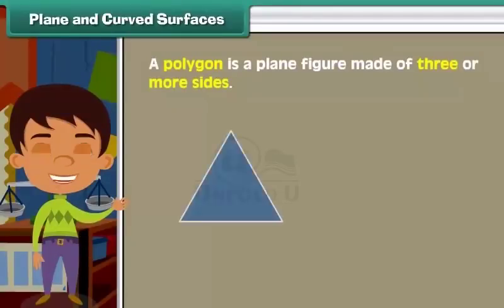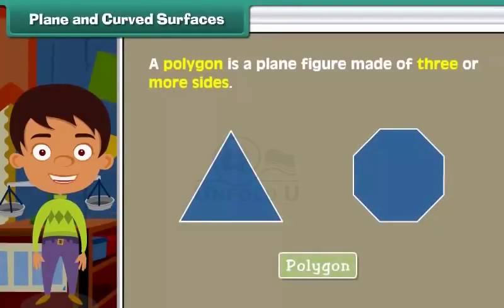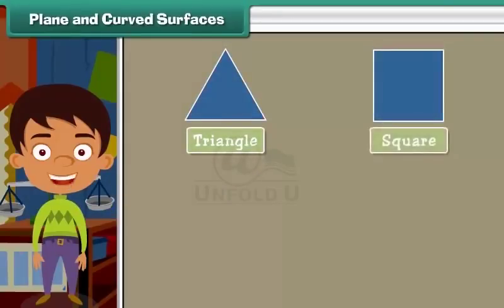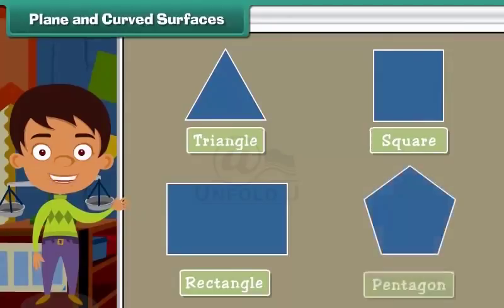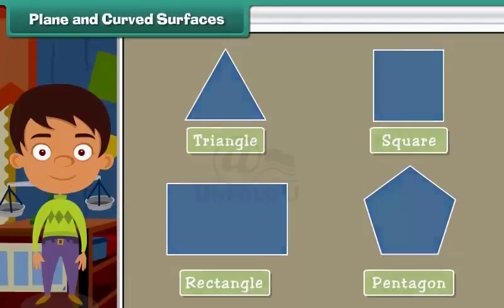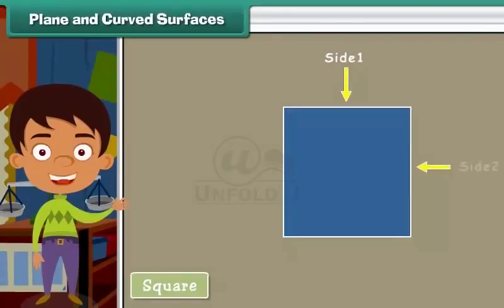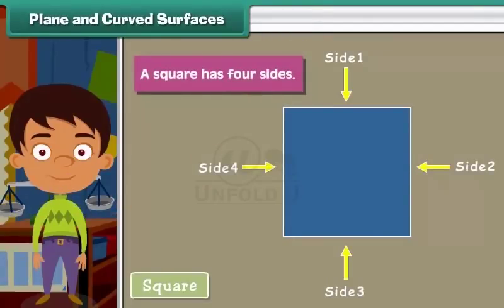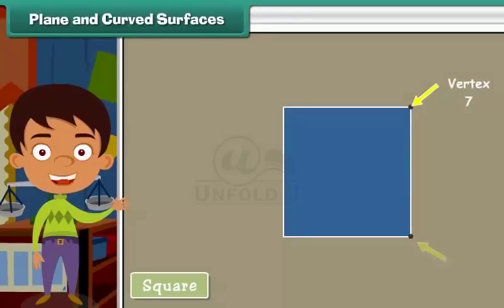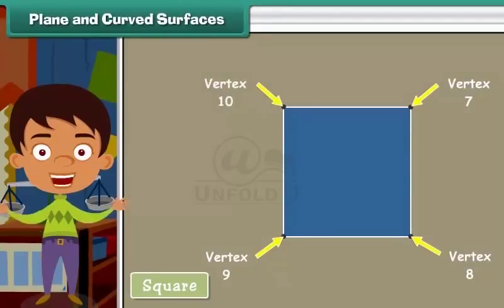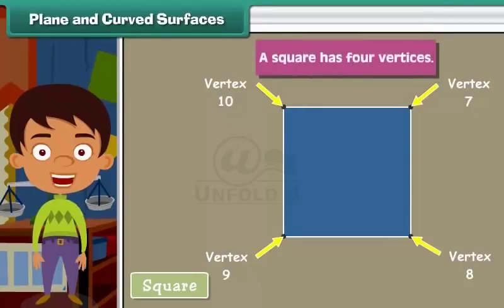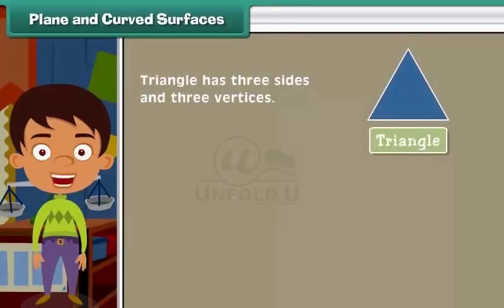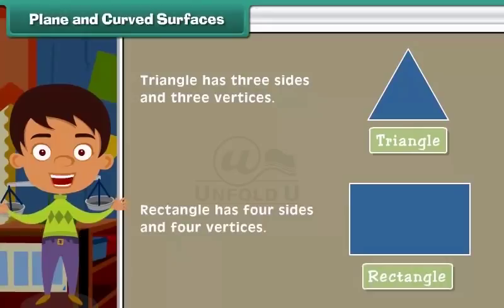A polygon is a plane figure made of three or more sides. Various types of polygons are triangle, square, rectangle, and pentagon. Now we'll study plane figures, sides, and vertices. Look at this square. Arrows one, two, three, four indicate the sides of a square. A square has four sides. The point at which two sides meet is called a vertex. Arrows six, seven, eight, nine indicate the vertices of a square. So here we see a square has four vertices. Similarly, triangle has three sides and three vertices. Rectangle has four sides and four vertices.